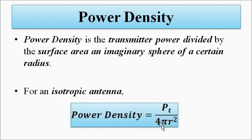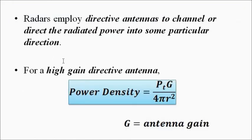This is particularly applicable for an isotropic antenna — an isotropic antenna is one which radiates power uniformly in all directions. You can imagine the power being radiated from the center, and the power density at any point can be measured by imagining a sphere at that point of a certain radius. The power density at that point is given by the transmitted power divided by the surface area of that imaginary sphere.